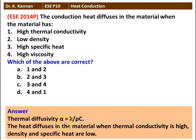Thermal diffusivity alpha = K / (rho × C), where K is the thermal conductivity, rho is the density, and C is the specific heat. The heat diffuses in the material when the thermal conductivity is high and density and specific heat are low. So high thermal conductivity (option 1) and low density (option 2) are correct. High viscosity and high specific heat do not increase the diffusion of heat energy into the material. The answer is 1 and 2.